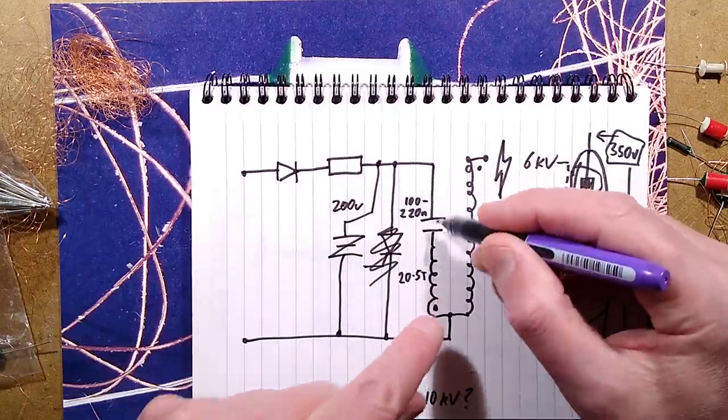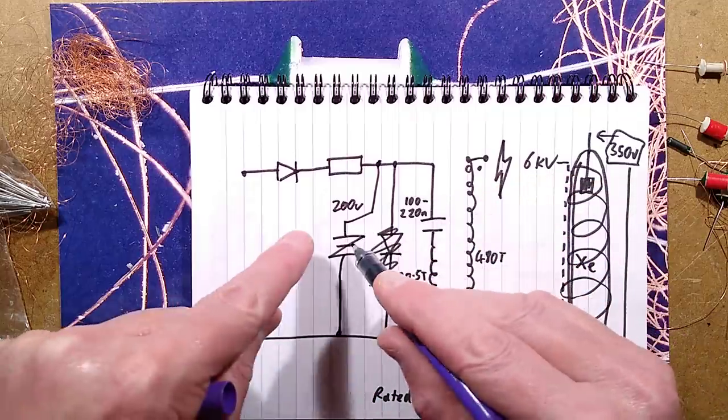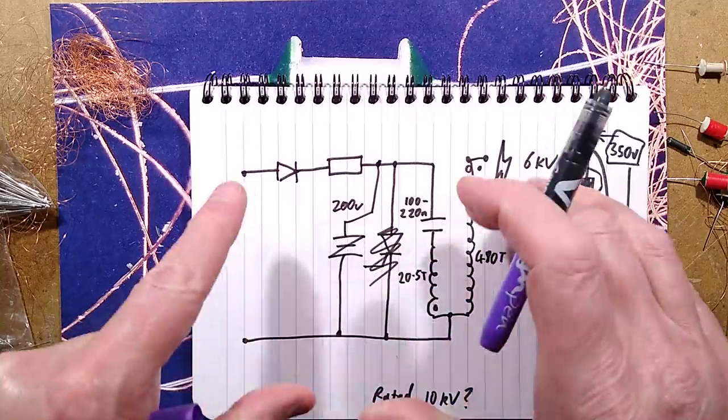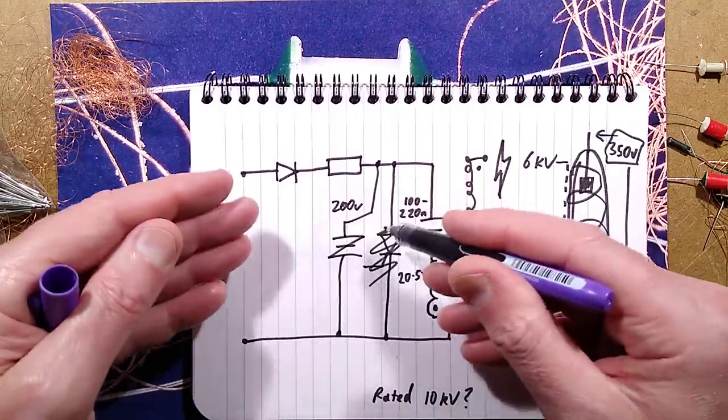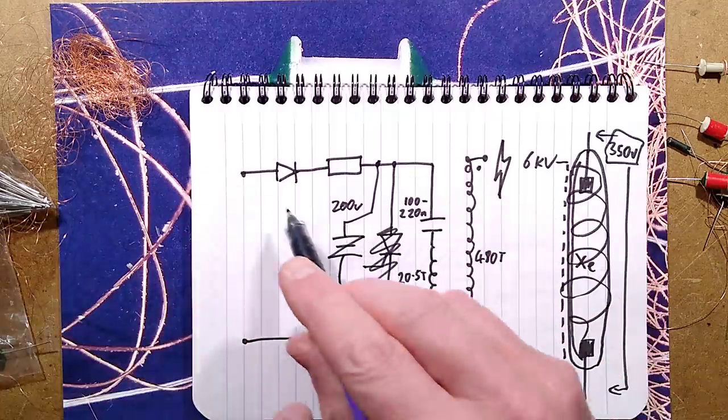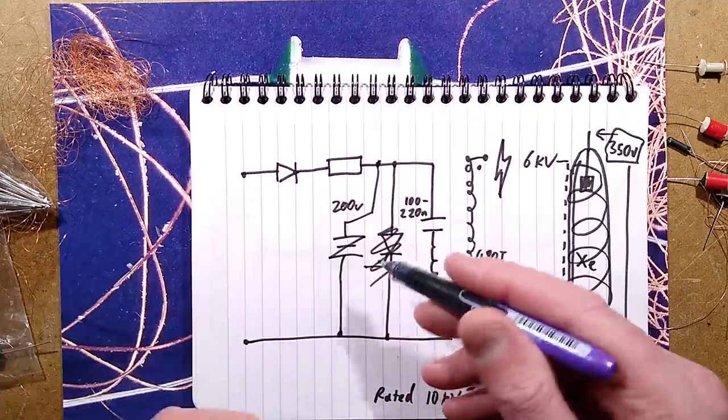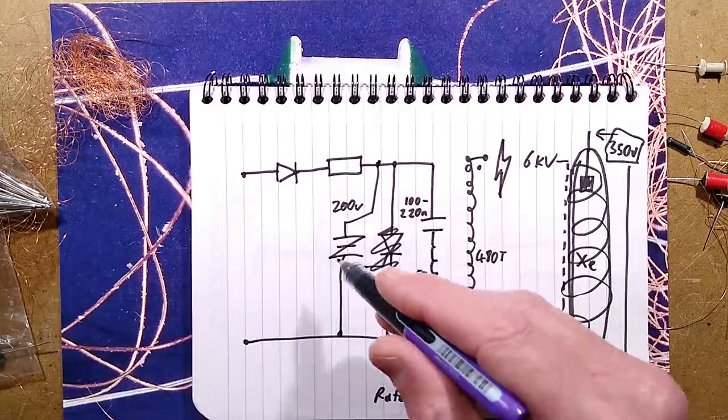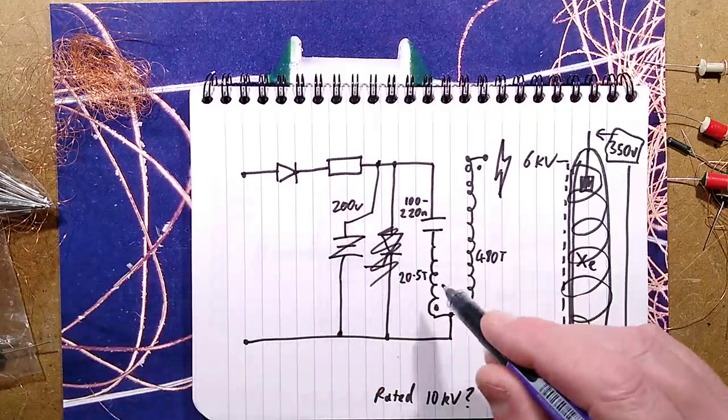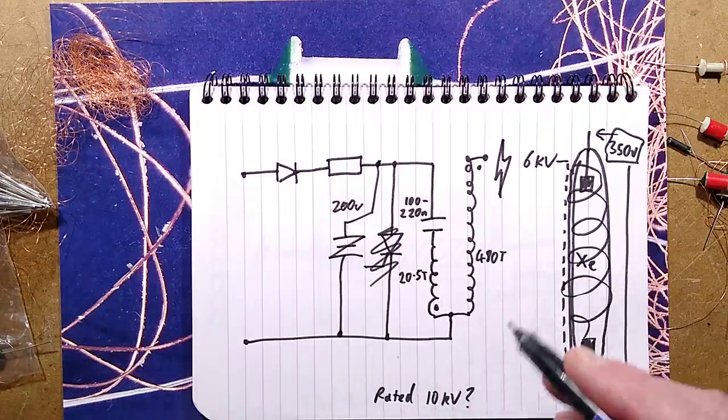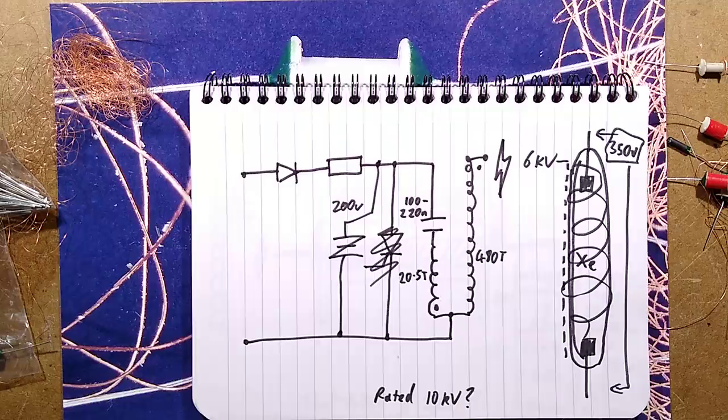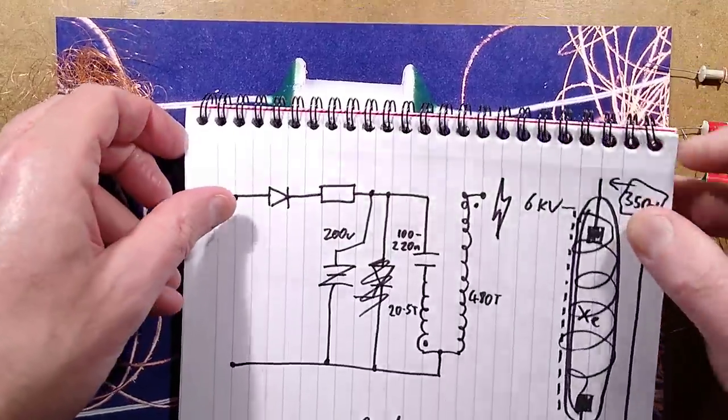Say for instance the 200 volt one: as soon as the voltage across this capacitor and winding reaches 200 volts, that will switch on itself. It will just shunt the thing. As soon as it reaches a sort of lower voltage level it will reset. So basically it will be able to fire like 50, 100, or 60, 120 times a second depending on how it's configured.